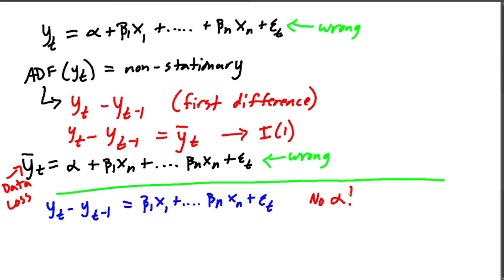And the reason for this is we're going to use a little algebra here and just rewrite the equation. So y of t is equal to y of t minus one plus beta one x one plus all of your betas to beta n x n plus epsilon t here.